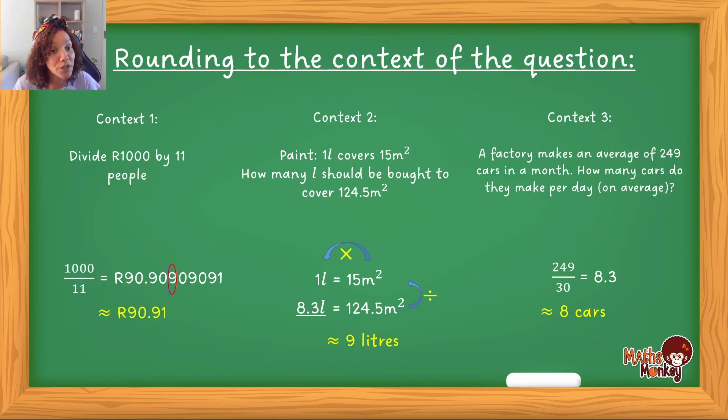If you look at context 2 and context 3, exactly the same answer of 8.3, but because of the context, we then round it off differently. Really in this video, I just want you to remember that when you're rounding off larger numbers, say the numbers, say the number and use the line and circle method. When you're working with money, round off to two decimal places. And then for all of the questions in your exams, always look at the context and what is the story of the question, and then make sure that you round off your answer correctly according to that story.